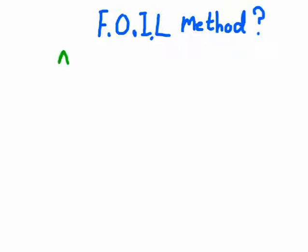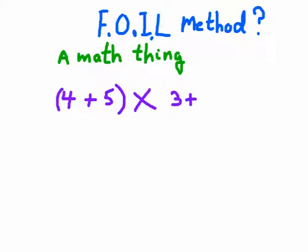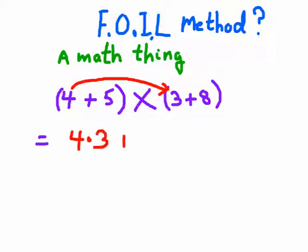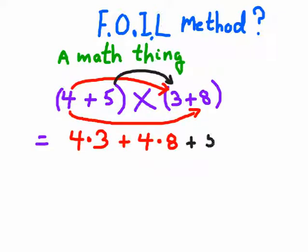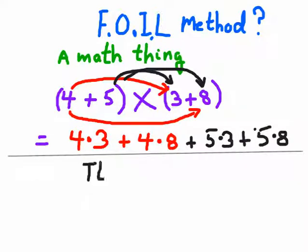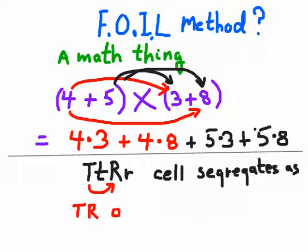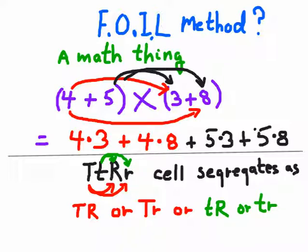Now some websites, some teachers — there are a zillion ways to explain dihybrid crosses. But some teachers teach it with this FOIL method. Do you remember doing FOIL in grade nine? First, outer, inner, last. So I'll just show you this in case you remember doing that stuff — one way to combine the letters to make different combinations when you're reproducing. It's pretty much like grade nine FOIL: how to multiply two binomials together. You probably hated that. Let's not do it that way. Let's try a different way.